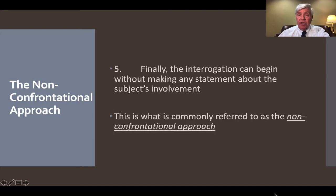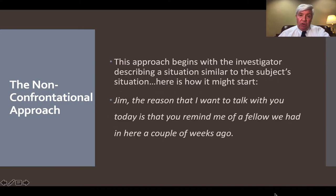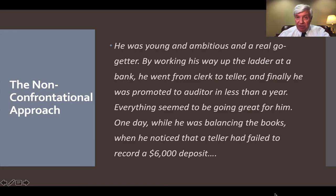The fifth option is what is called the non-confrontational approach. The investigator does not make any statement indicating the subject's direct involvement in committing the crime, but sidesteps that and simply begins talking about a parallel situation. For example: 'Jimmy, the reason I wanted to talk to you is that you reminded me of a young man I spoke to just a few weeks ago. He was a young man, ambitious, a real go-getter, and he made great progress working in a bank, moving from clerk to teller and then finally to auditor. Everything was going great for this guy, but then one day, as he was balancing the bank books, he discovered that a teller had failed to record a $6,000 deposit that had been made.' And then it continues from there.